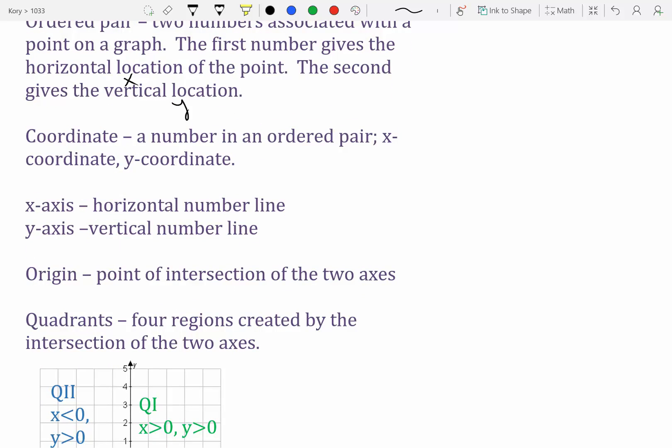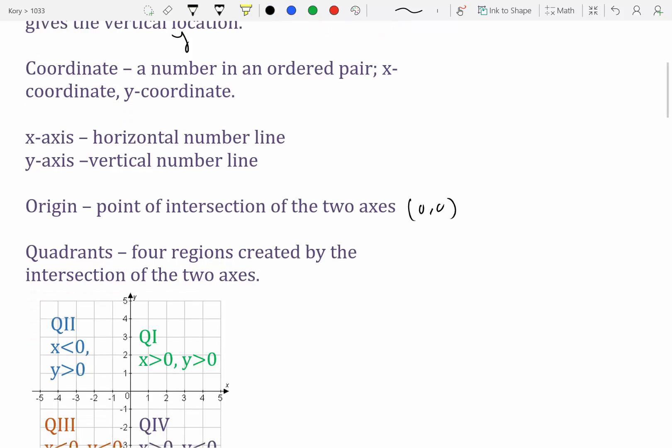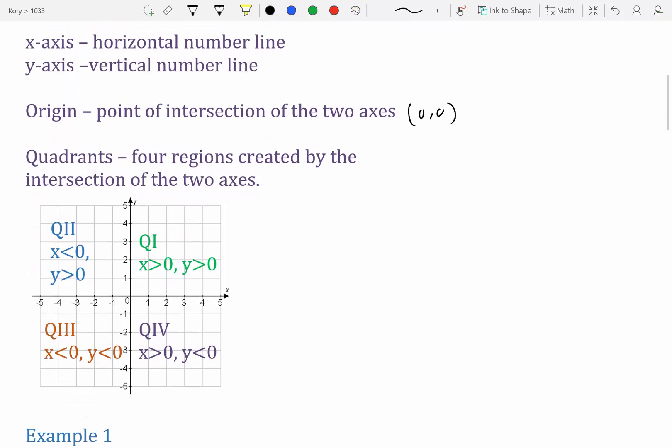Origin is the point of intersection of the two axes. So origin is 0, 0. There are four quadrants that make up the coordinate plane. Quadrant 1, quadrant 2, quadrant 3, and quadrant 4.